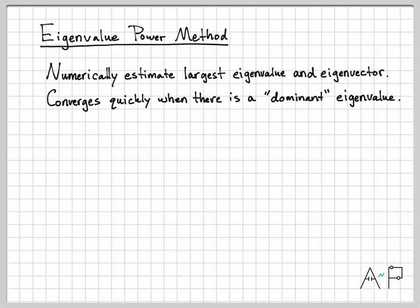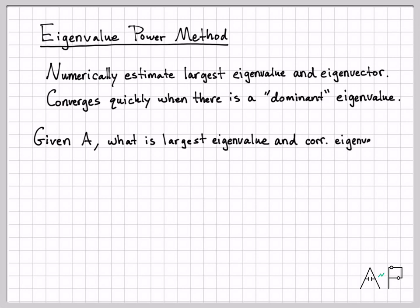First, let's work through the details of the algorithm — just the mechanics of the steps you perform — and then we'll do an example or two of actually applying that algorithm to a specific matrix. What we're trying to do here is, given some matrix A, we want to answer the question: what is the largest eigenvalue and the corresponding eigenvector? Here's the power method algorithm we're going to use.